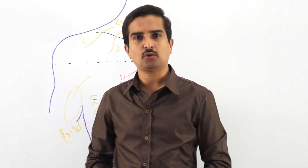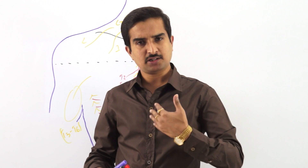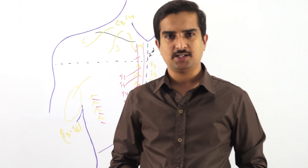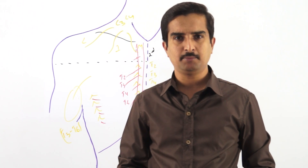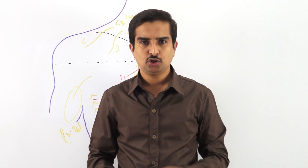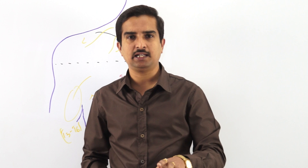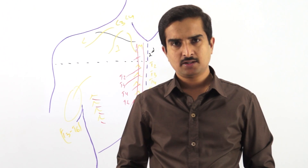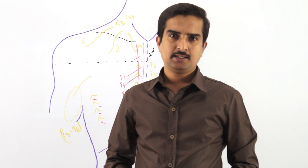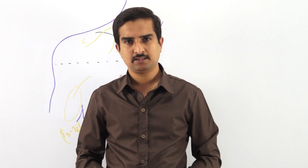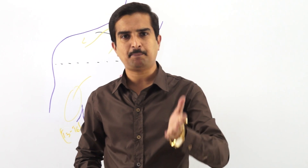Although the platysma is related to the neck region, we discuss it in the pectoral region because its fibers arise from the pectoral fascia — the deep fascia of the pectoral region. Remember: whenever you use the term 'pectoral fascia,' you are referring to the deep fascia, not the superficial fascia. The platysma is a broad sheet of subcutaneous muscle whose fibers arise from the upper part of the pectoral fascia, which is the fascia covering the pectoralis major muscle.